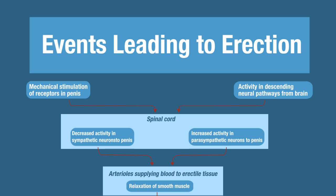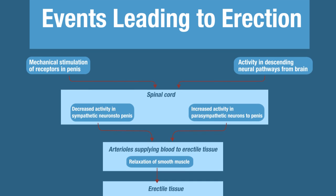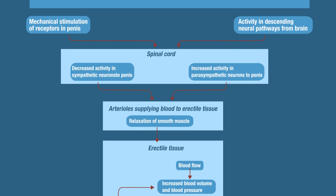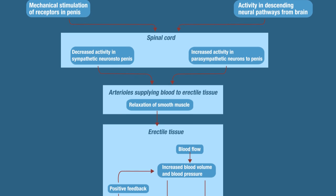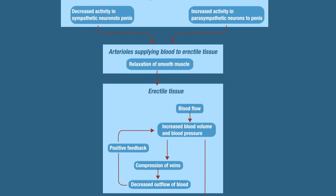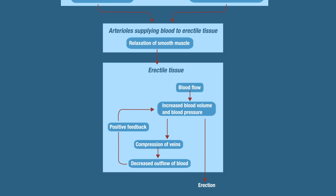Since parasympathetic activity increases, sympathetic activity decreases. The parasympathetic neurons to the penis relax the smooth muscle of the arterioles that supply blood to the erectile tissue of the penis. This causes vasodilation of the arterioles supplying blood to the erectile tissue, which increases blood flow. Therefore, blood volume and blood pressure go up, leading to an erection.